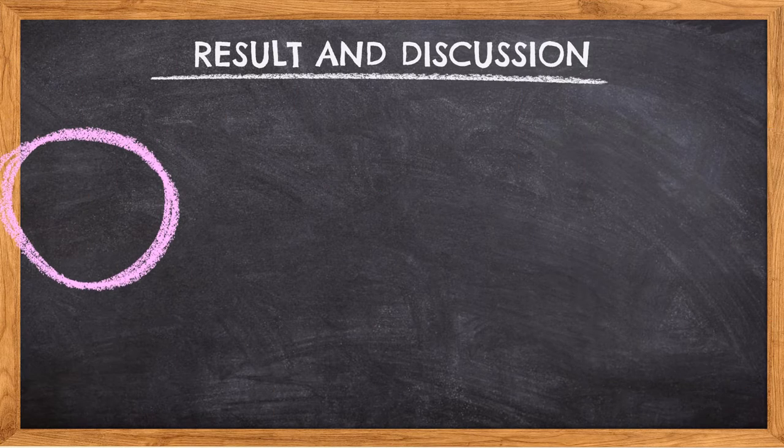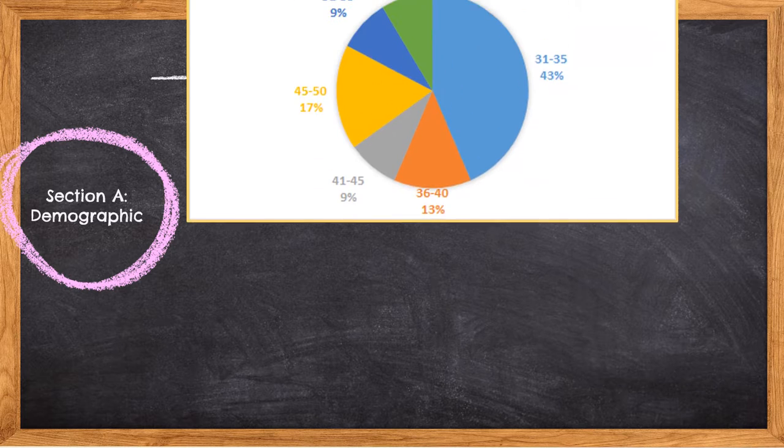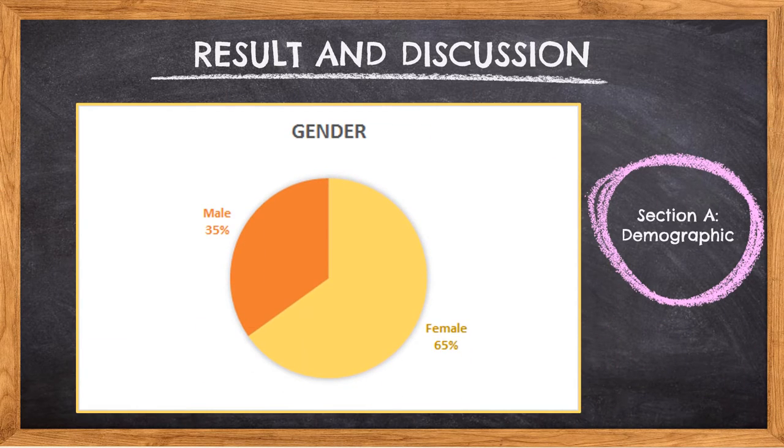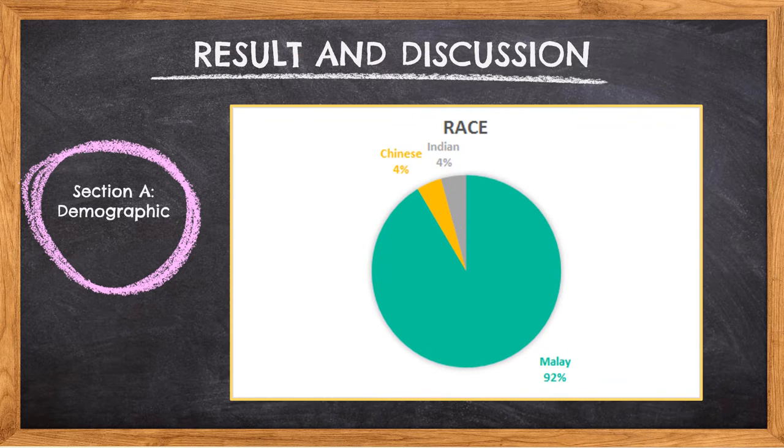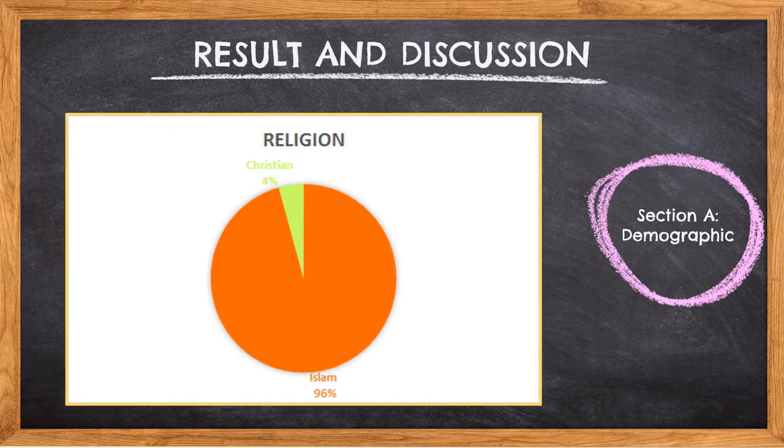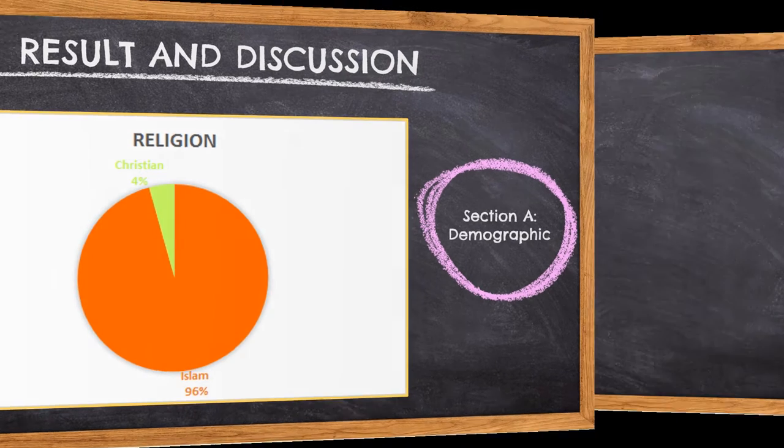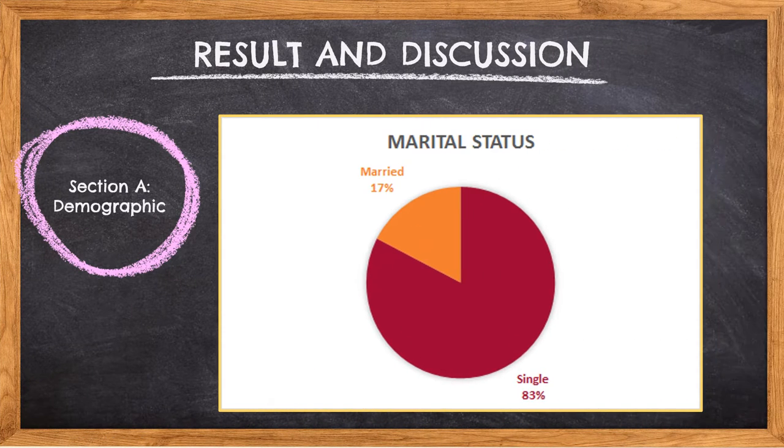Results and discussion for Section A which is socio-demographic. The majority of participants ranged in age from 31 to 35 years old. As shown 65% of the respondents were female and 35% were male. The highest respondent are Malay 92% followed by Chinese and Indian 4%. Only 4% were Christian and others were Islam 96%. Most of the respondents were married 83% and only 17% single status.